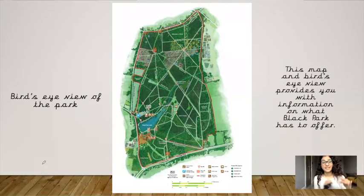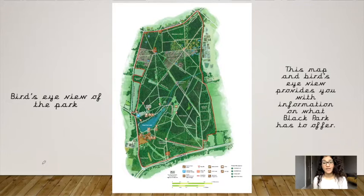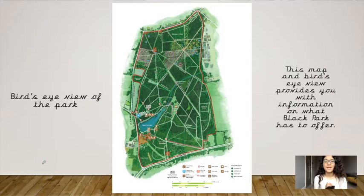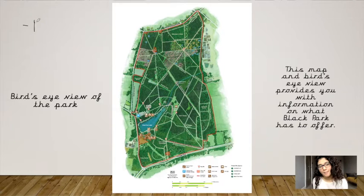This is a bird's eye view of the park. This map and bird's eye view provides you with information on what Black Park has to offer. What you can see really clearly from this bird's eye view image or map is the shape of the park — that is really important.